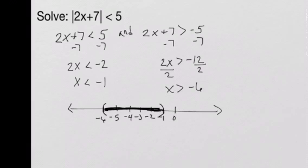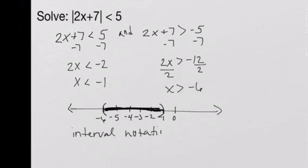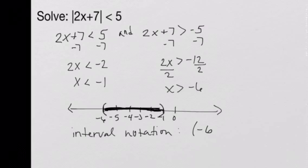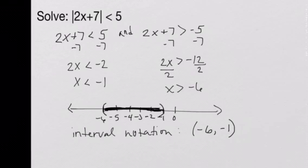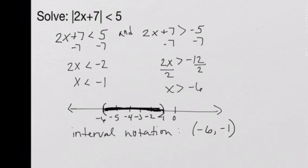That graph guides us in writing our interval notation. Our interval notation starts from negative 6 with a parentheses — because we get close but cannot use that number — and ends at negative 1, again with a parentheses because we cannot include it either. So our solution in interval notation is (-6, -1).